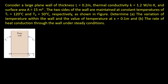The question is: consider a large plane wall of thickness L = 0.2 meters, thermal conductivity K = 1.2 W/m·K, and surface area A = 15 m² as shown in the figure. The two sides of the wall are maintained at constant temperatures T1 = 120°C and T2 = 50°C. We need to determine the variation of temperature within this wall, the temperature at x = 0.1 m, and the rate of heat conduction through the wall under steady conditions.